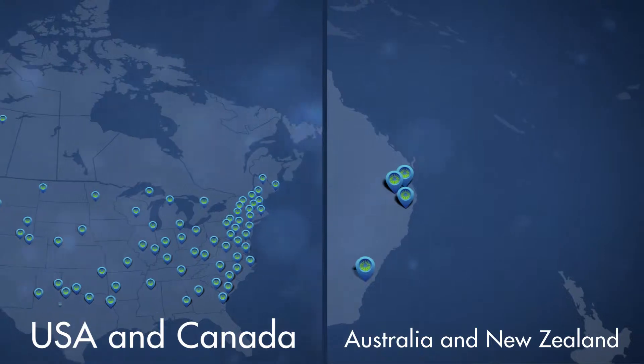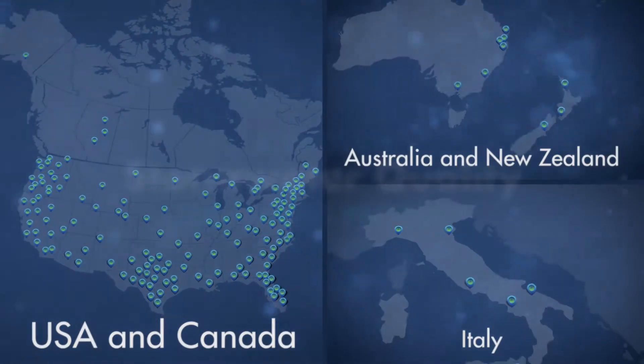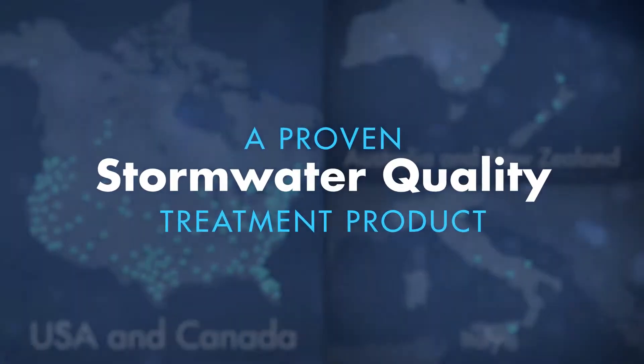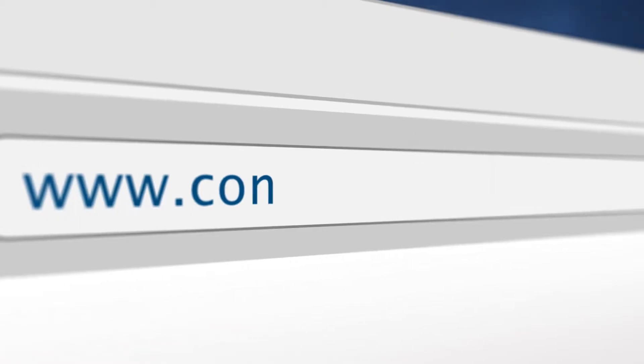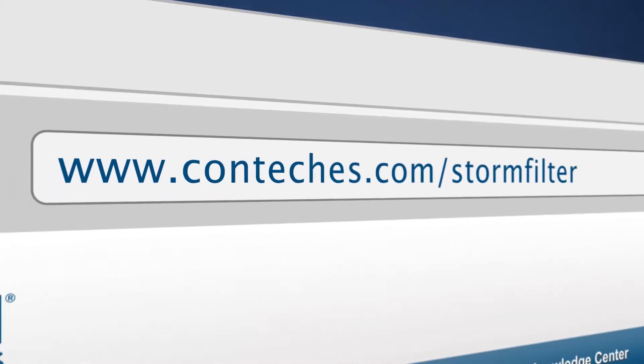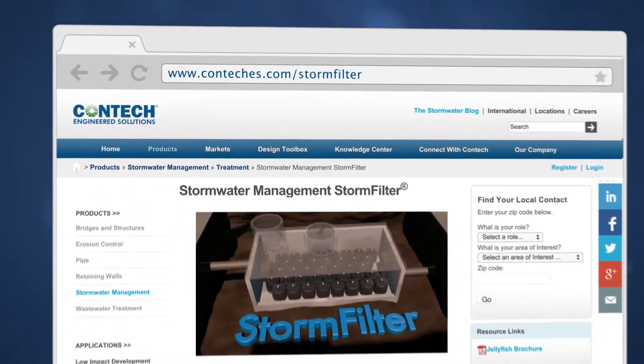Including the Washington State Department of Ecology and the New Jersey Department of Environmental Protection, the storm filter is a proven stormwater quality treatment product. Please visit www.contaches.com/stormfilter for more information on storm filter, including technical information and a collection of case studies.